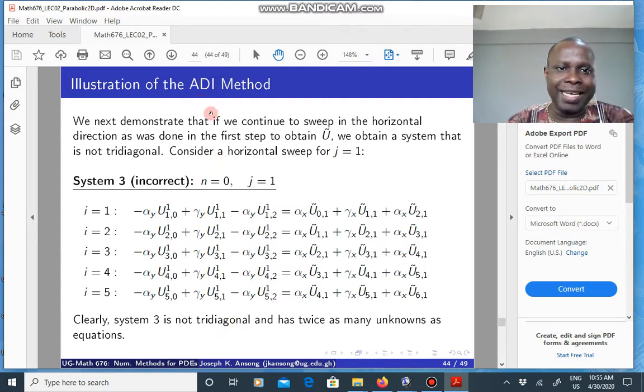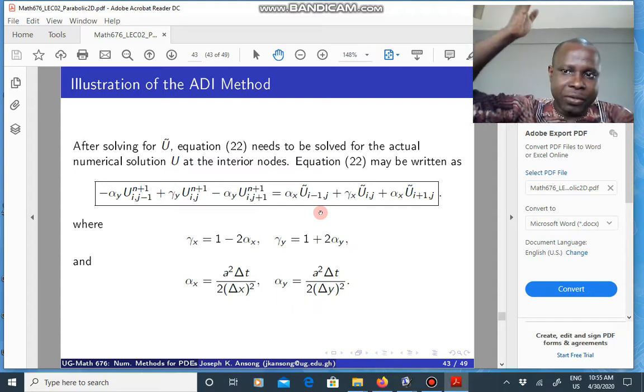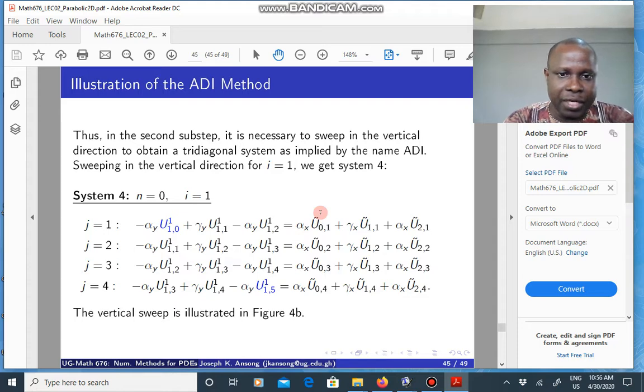That is why the method is called ADI, alternating direction implicit. In the second step you don't have to sweep in the horizontal. If you do that you get this incorrect system that you cannot solve. So the most appropriate thing to do in this step is that using this equation now in the second step, you sweep in the vertical direction. You take a value of i and then look for a system for different values of j.